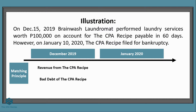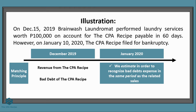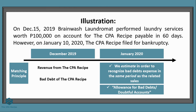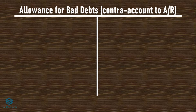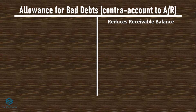That is why we try to estimate bad debts or doubtful accounts — we try to recognize bad debts expense in the same period as the related sales, even without 100% solid evidence that the customer won't pay. That is why the account we use is called 'allowance for doubtful accounts' or 'allowance for bad debts' — because this is just an estimate or an allowance. The allowance for bad debts is a contra-asset account to accounts receivable, meaning it reduces the presented balance of accounts receivable.